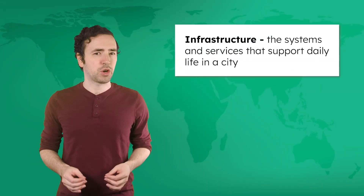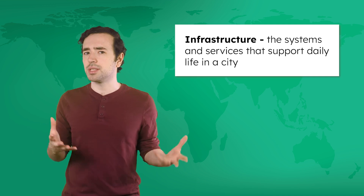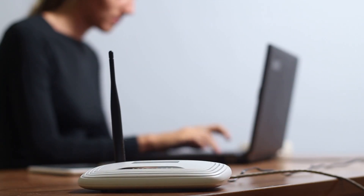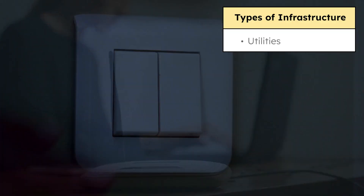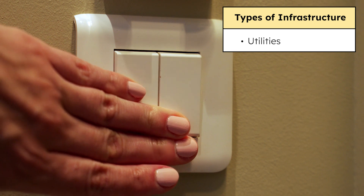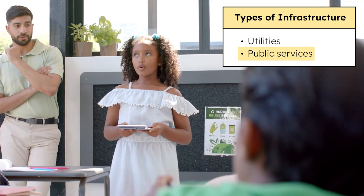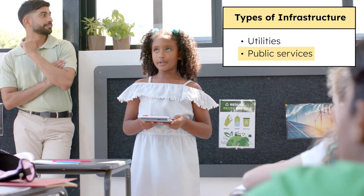So what do we mean when we say infrastructure? Infrastructure is all the systems and services that support daily life in a city. Resources like water, electricity, and the internet are all utilities — essential infrastructure in built structures like homes and offices. Also, cities manage public services that benefit their residents, like public schools.